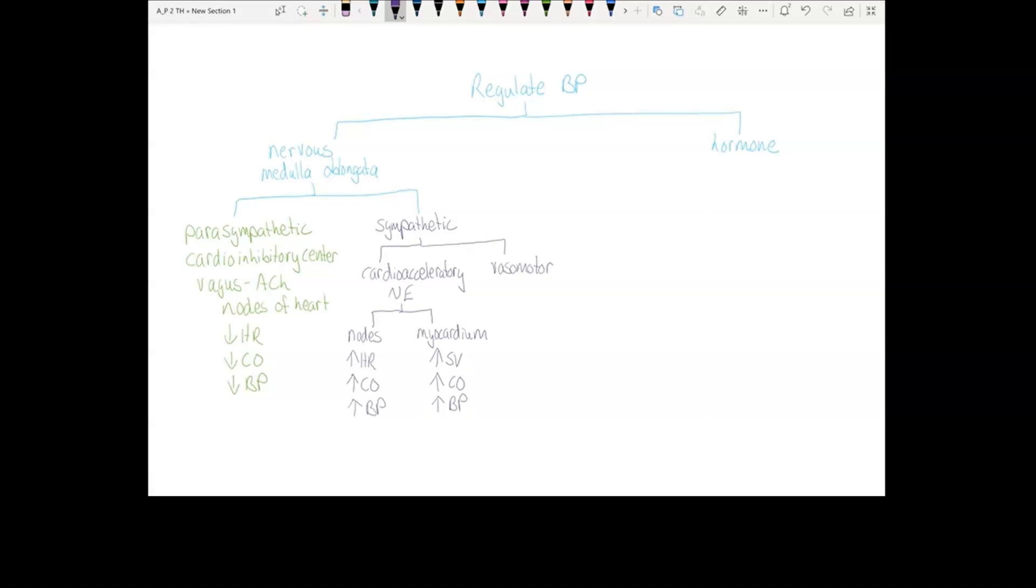The vasomotor center is what controls your blood vessels. Sympathetic stimulation from the vasomotor center causes vasoconstriction. This increases resistance, which increases blood pressure.